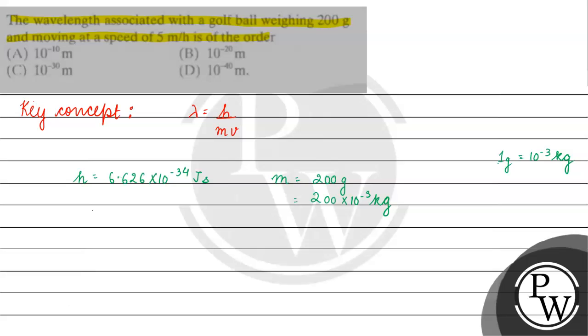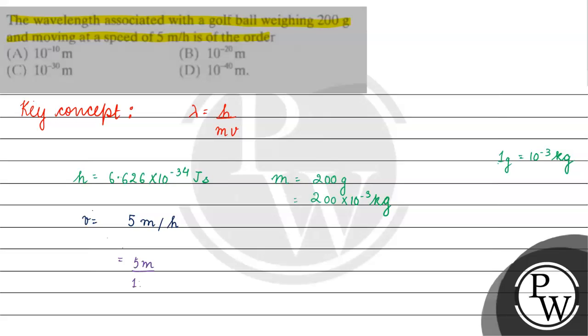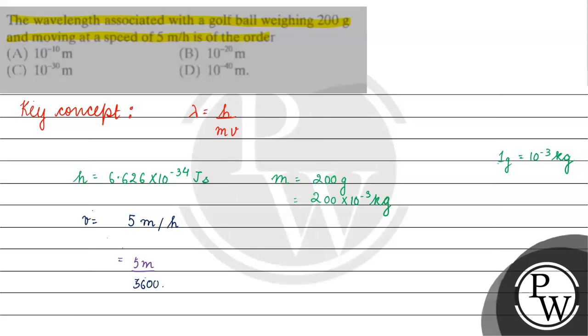Now if we talk about V, V is given as 5 meters per hour. If we want to convert it per second, we have 5 meters per hour. 1 hour can be written as 60 minutes, which is 60 into 60 seconds. So V basically comes as 5 meters by 3600 seconds, the velocity of the particle.